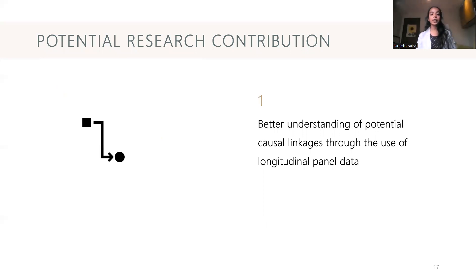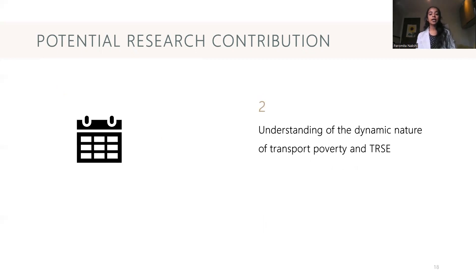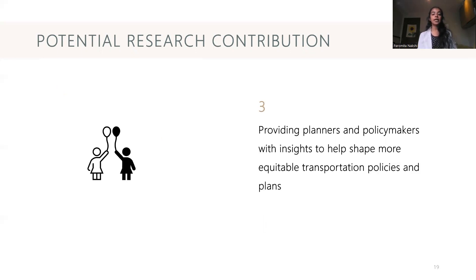So how can my research contribute to the existing knowledge base? First, through the use of longitudinal panel data, it will give us a better understanding of potential causal linkages that cross-sectional research cannot provide. Similarly, it will help us better understand the dynamic nature of transport poverty and transport-related social exclusion in Canada. And finally, it will provide planners and policy makers with insights to help shape more equitable transportation policies and plans.